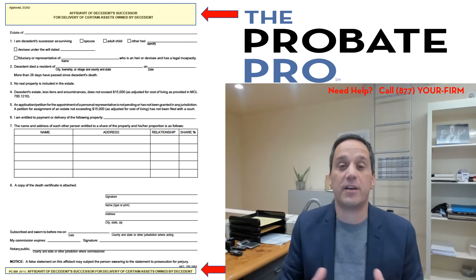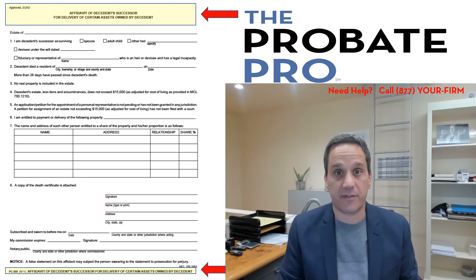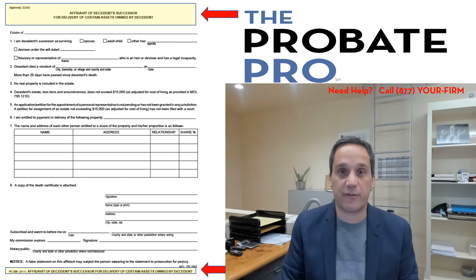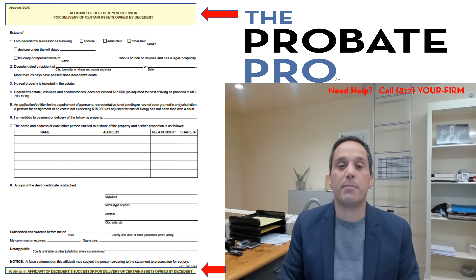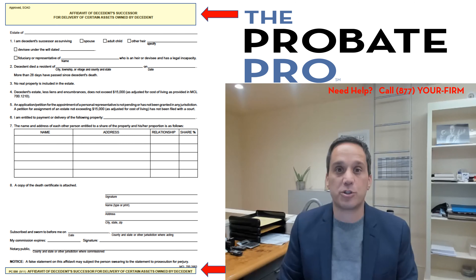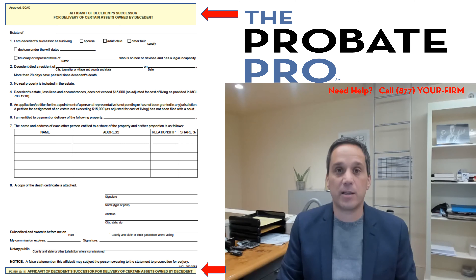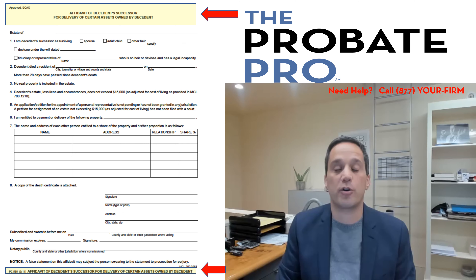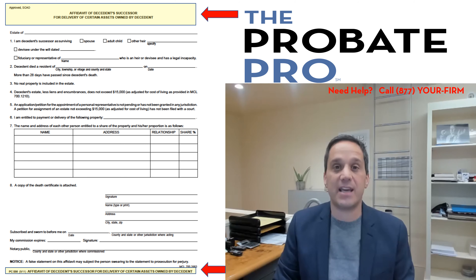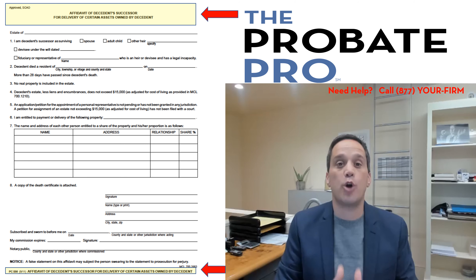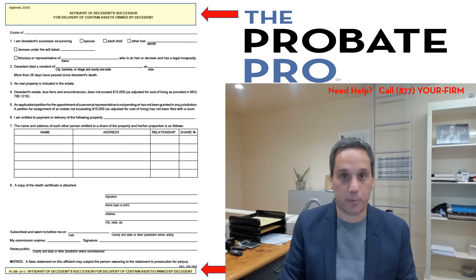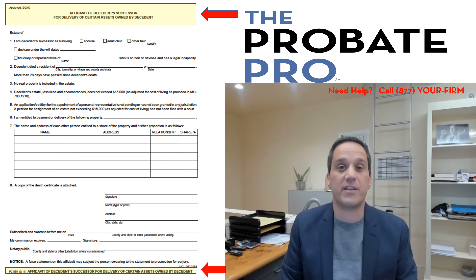This is a process that often can be done without the assistance of an attorney. It can be done by completing the form and following the requisite steps, and very quickly getting money from a financial institution into a family member's hands. This form is available — you can search for it, or you can go to my website or call my office. It is an affidavit form of probate, which means there is no court involvement — hear me again — no court involvement in this process to gain access to the funds.